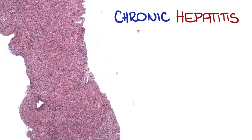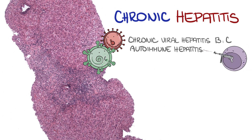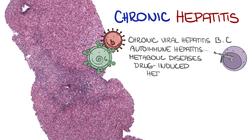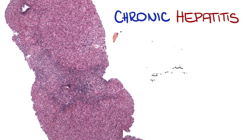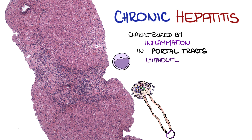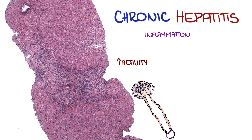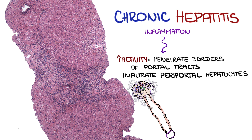The microscopical picture of chronic hepatitis is typical for chronic viral hepatitis B and C, or autoimmune hepatitis. Also, some metabolic diseases, drug-induced hepatopathies, or disorders of the biliary tree may manifest as chronic hepatitis. Microscopically, chronic hepatitis is characterized by inflammation in portal tracts, with a predominance of lymphocytes and plasma cells. As the activity of the disease increases, the inflammation may penetrate the borders of portal tracts and infiltrate the surrounding zone of periportal hepatocytes. This microscopical pattern — composed of inflammation at the border of a portal tract and in the periportal zone together with damaged periportal hepatocytes — is called interface hepatitis.